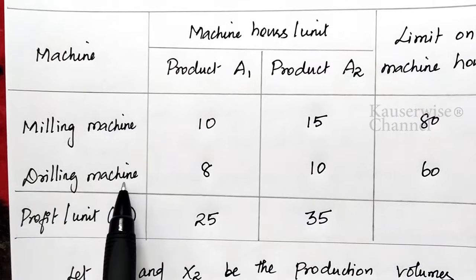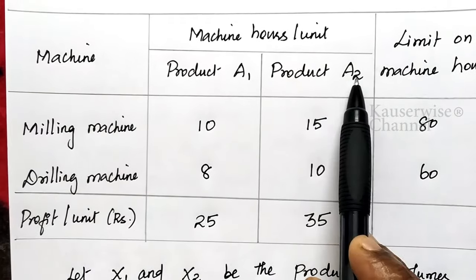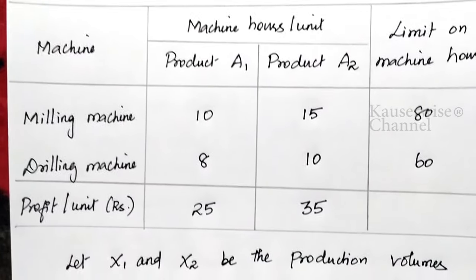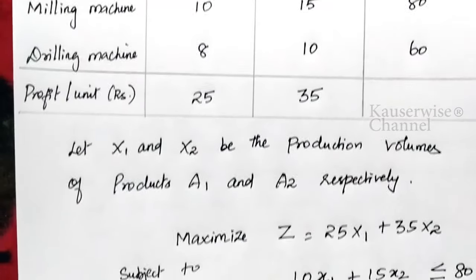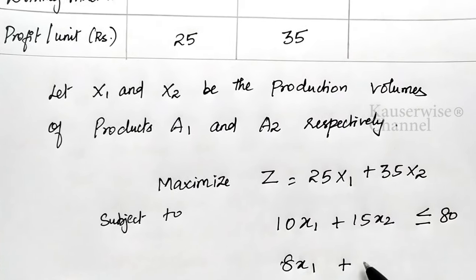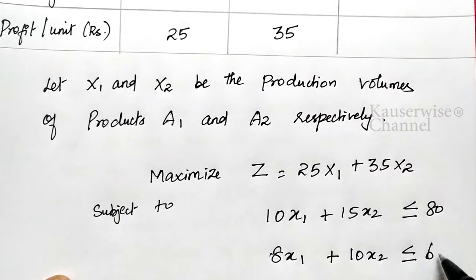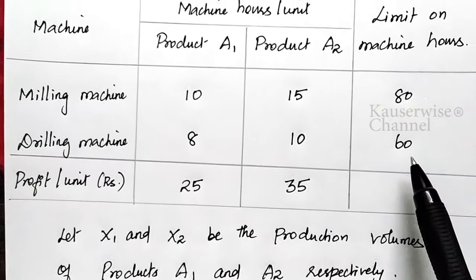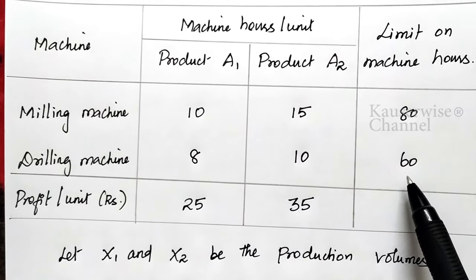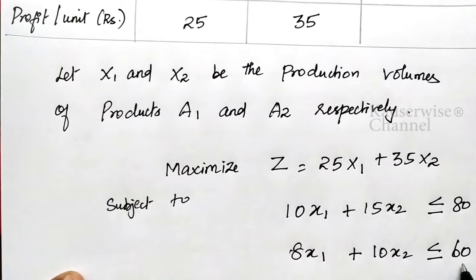In the same way, for the second constraint — drilling machine — for product A1 it is 8 hours and product A2 it is 10 hours, with a maximum limit of 60 hours. So the second constraint is: 8X1 + 10X2 ≤ 60, because the maximum duration is 60 hours per week.